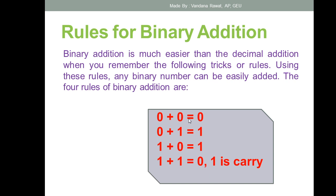Zero plus zero is zero, zero plus one is one, one plus zero is one — these three rules are very easy. But whenever it comes to one plus one, one plus one always equals zero, and you have to mention one in the carry section. This fourth rule you must keep in mind whenever you perform binary addition — this is the main point.